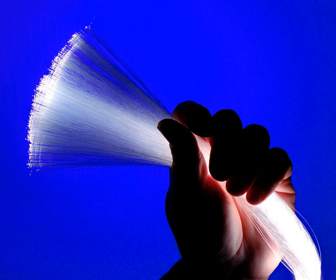Rays that meet the boundary at a lower angle are refracted from the core into the cladding, and do not convey light and hence information along the fiber. The critical angle determines the acceptance angle of the fiber, often reported as a numerical aperture. A high numerical aperture allows light to propagate down the fiber in rays both close to the axis and at various angles, allowing efficient coupling of light into the fiber. However, this high numerical aperture increases the amount of dispersion as rays at different angles have different path lengths and therefore take different times to traverse the fiber.